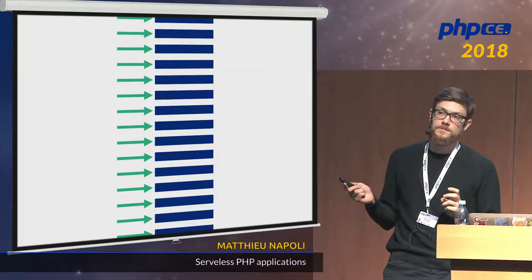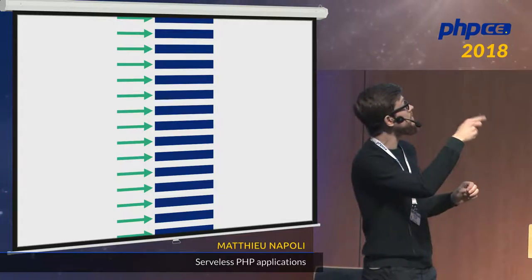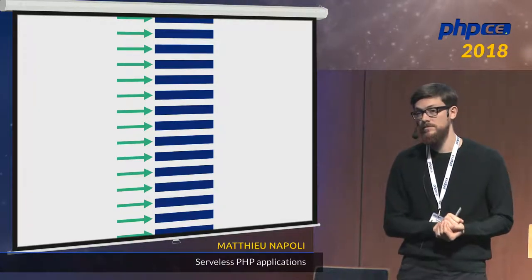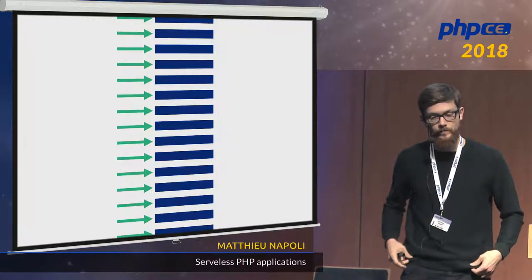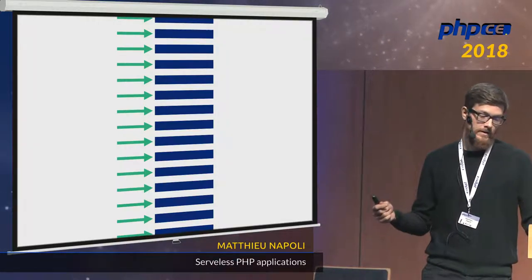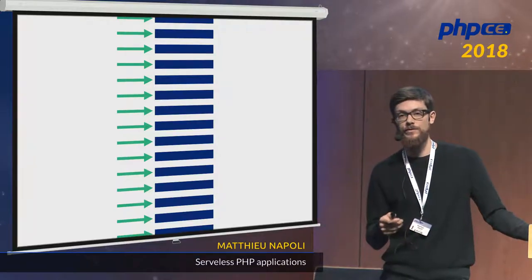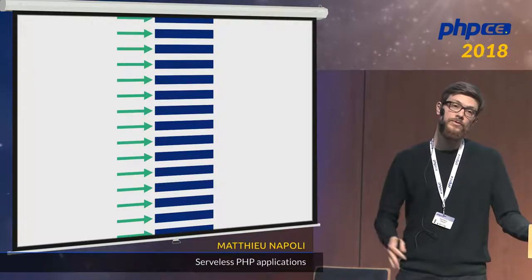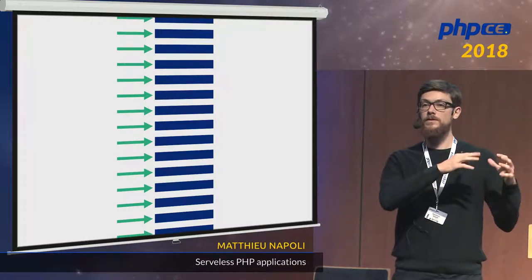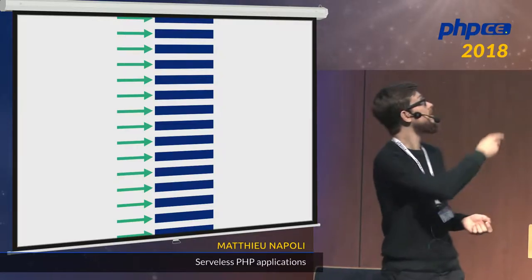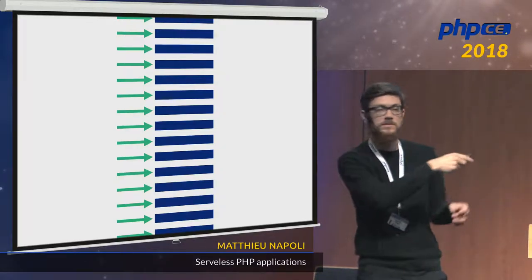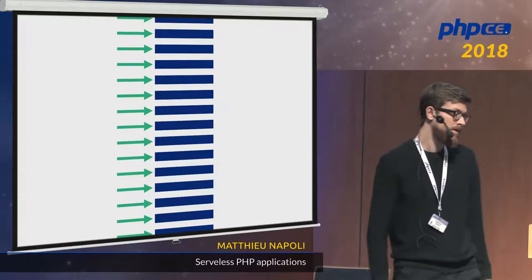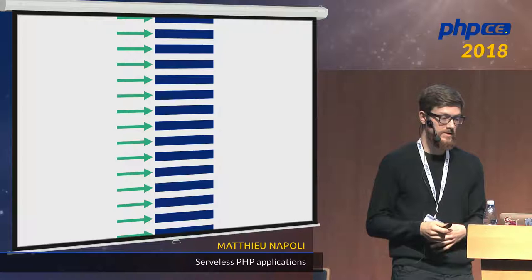One thing to keep in mind: if 1,000 PHP processes hit the same database at the same time, you'll have a bottleneck — so this is not magic. If you expect huge traffic spikes, you may want to build your application serverless from end to end — serverless before with load balancers, serverless after with serverless databases — things that can scale at the same rate as your PHP applications.